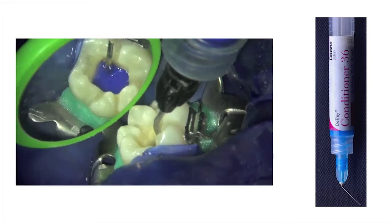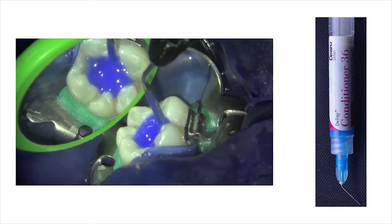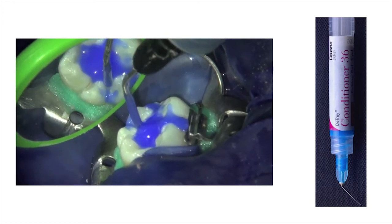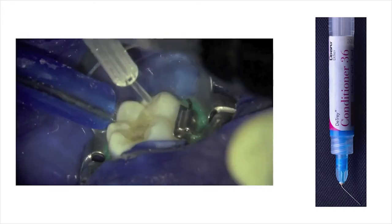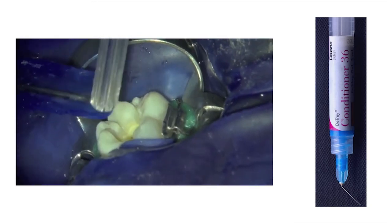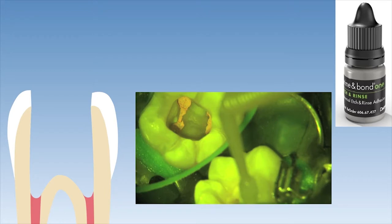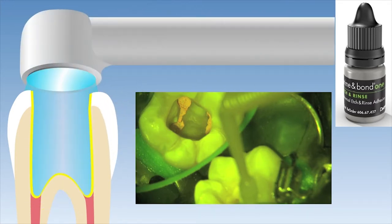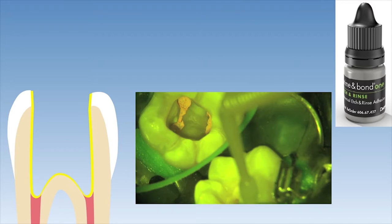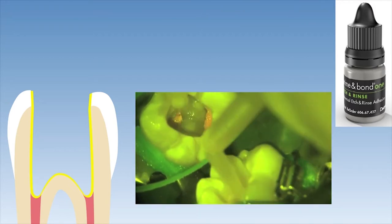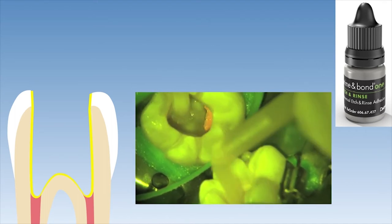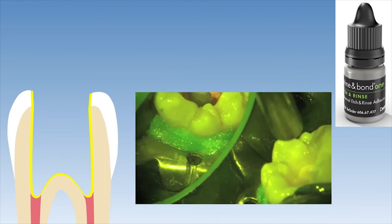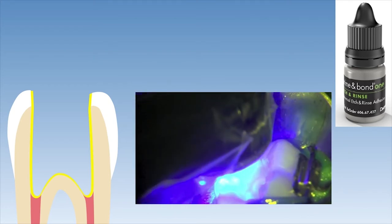The enamel and dentine was etched with phosphoric acid for 15 seconds before the etchant was rinsed off thoroughly with water and lightly air dried with compressed air. A micro brush saturated with Prime and Bond etch-and-rinse was used to infuse the bonding resin into the etched enamel and dentine surfaces for approximately 10 seconds before it was light cured for 20 seconds after evaporation of the solvent. Here we can see this step being performed clinically: bonding resin application infused into the etched enamel and dentine, followed by solvent evaporation, and finally the light curing step.